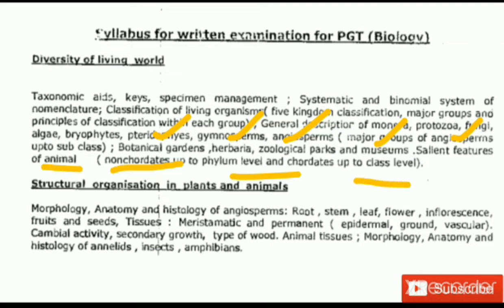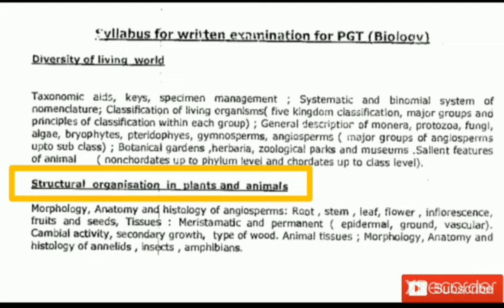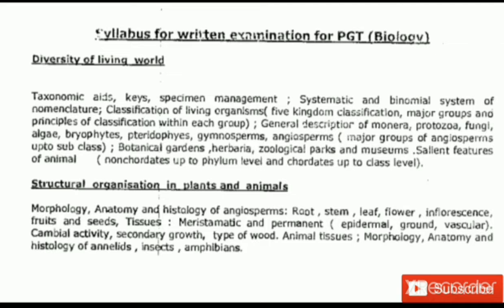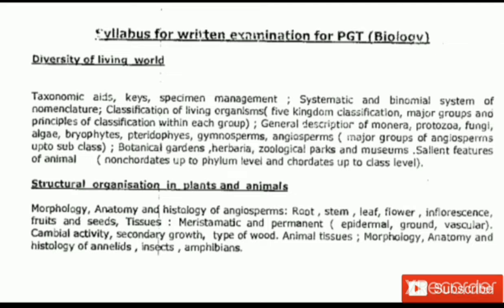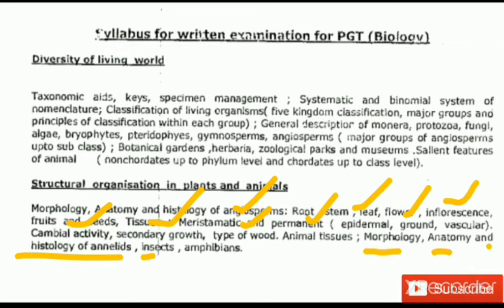After Diversity of Living World, the next topic is Structural Organization in Plants and Animals. Topics present here include morphology, anatomy, and histology of angiosperms — root, stem, leaf, flower, inflorescence, fruits, and seeds. Tissues covered include meristematic and permanent tissues: epidermal, ground, vascular types. Also cambial activity, secondary growth, types of wood, and animal tissue morphology, anatomy, and histology of annelids, insects, and amphibians.